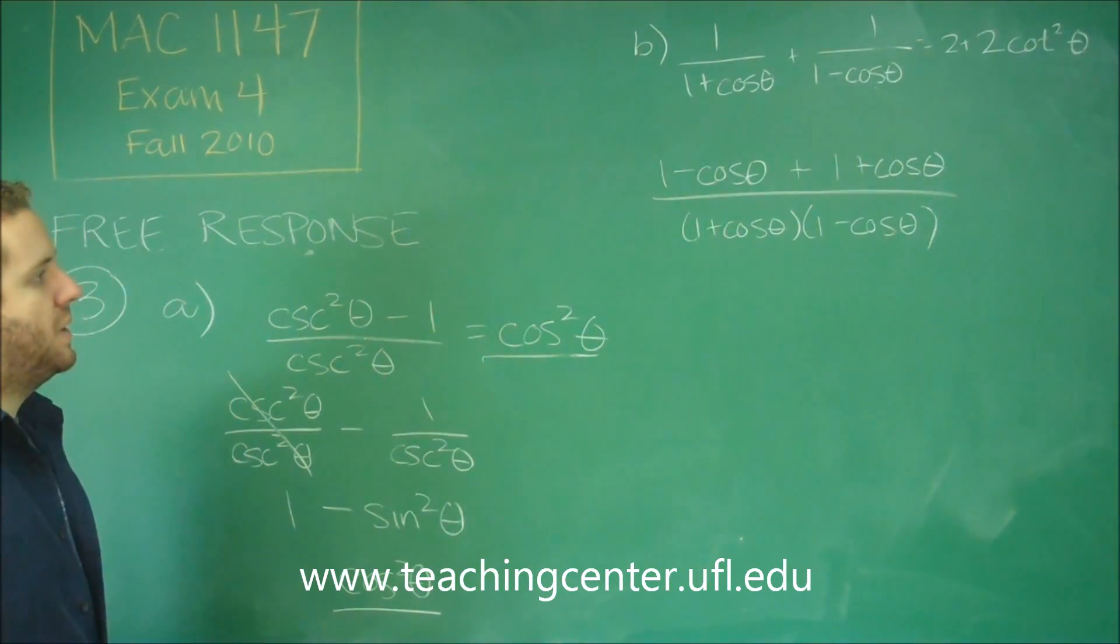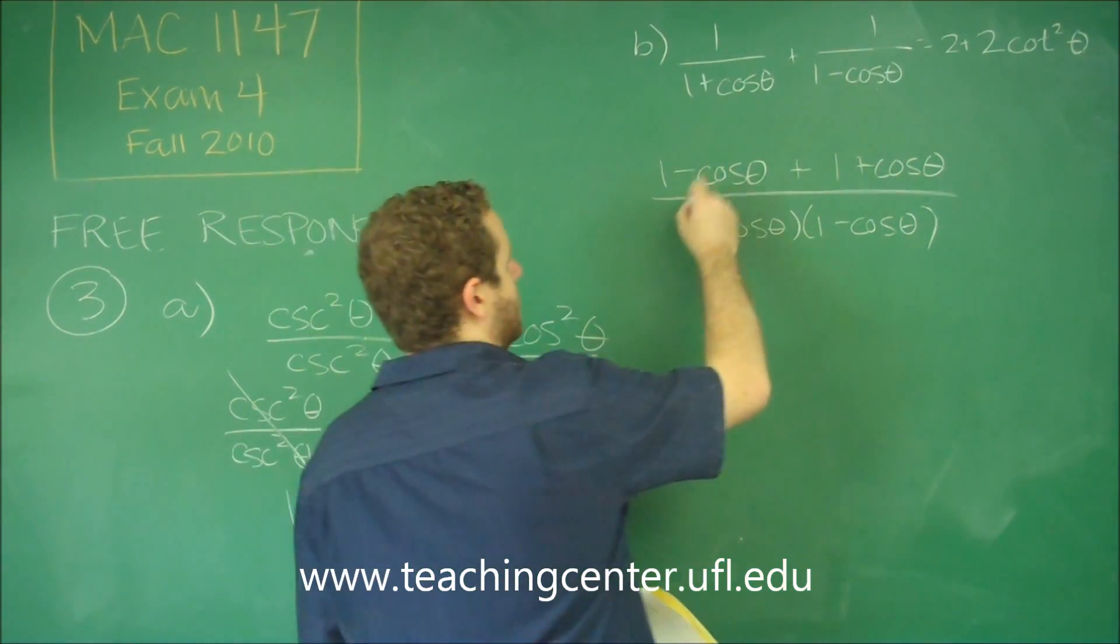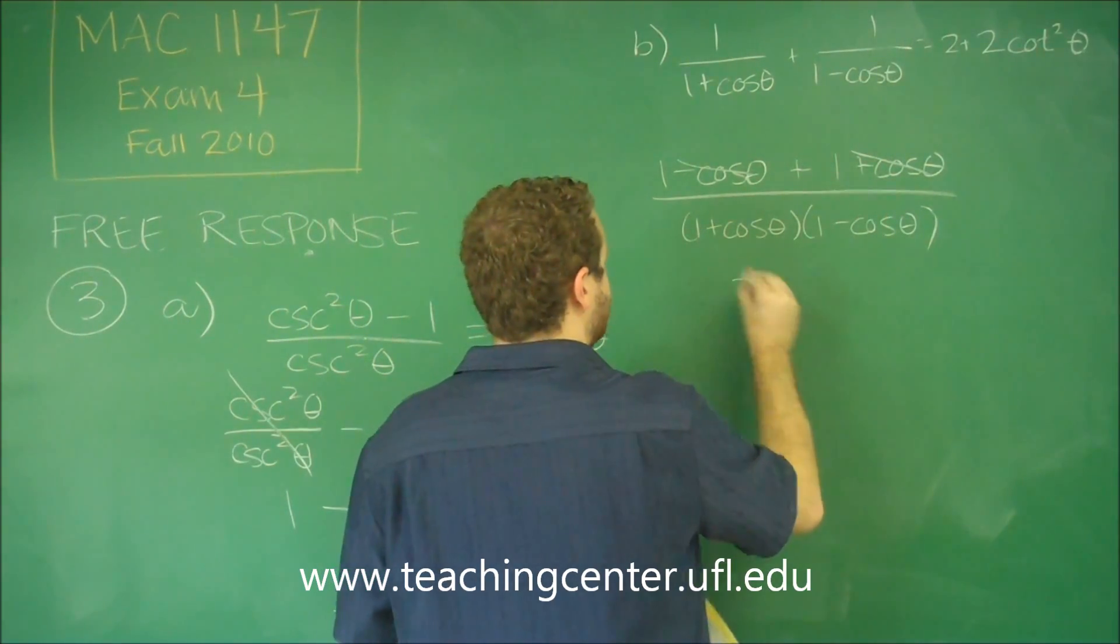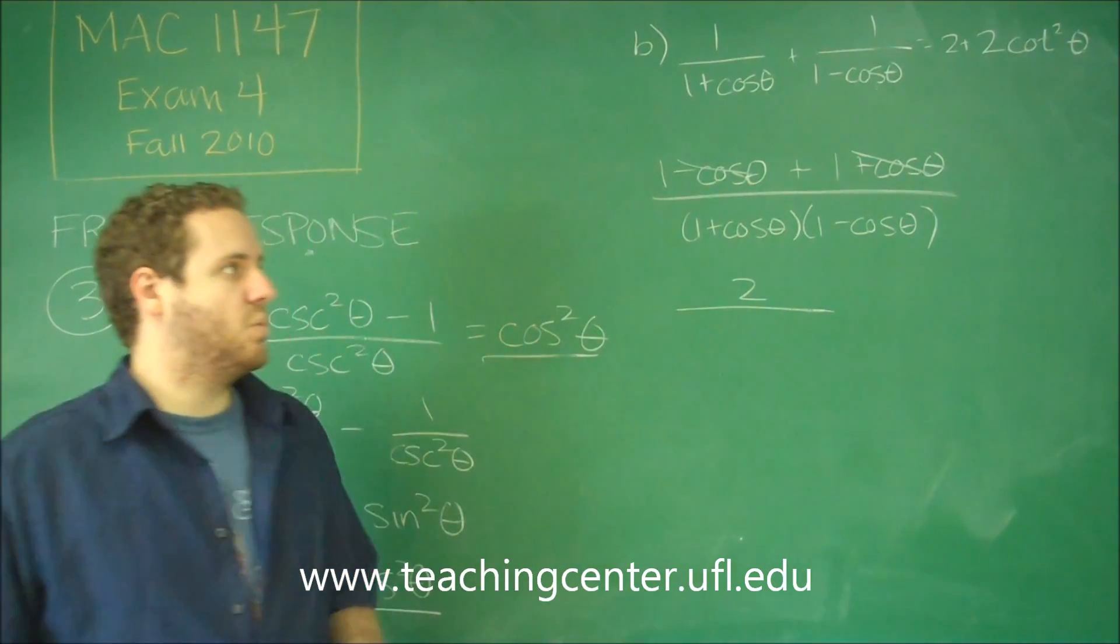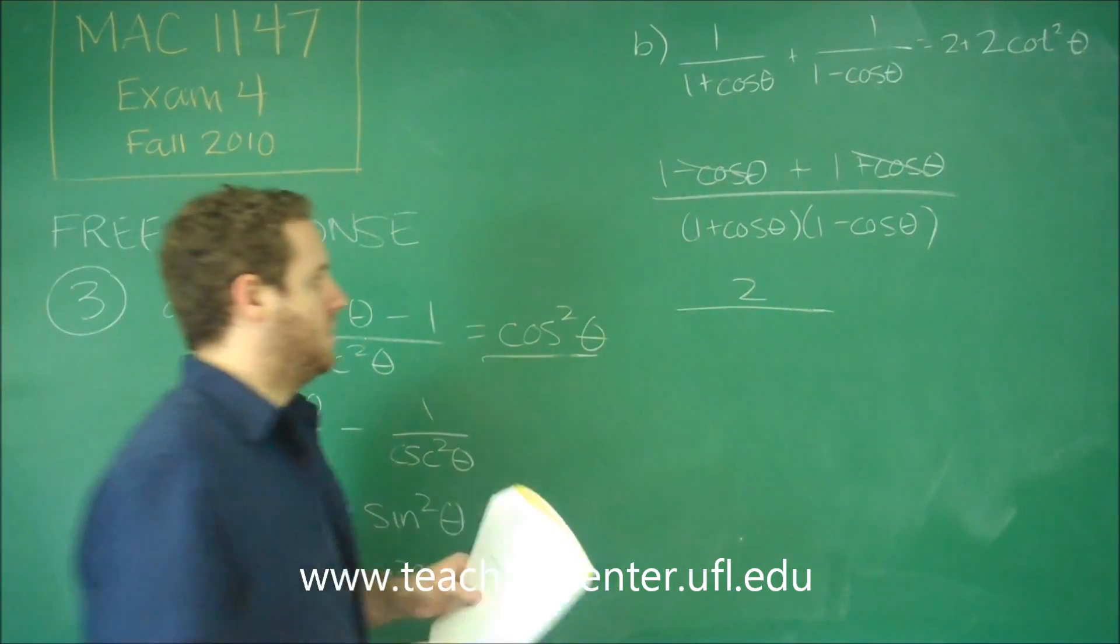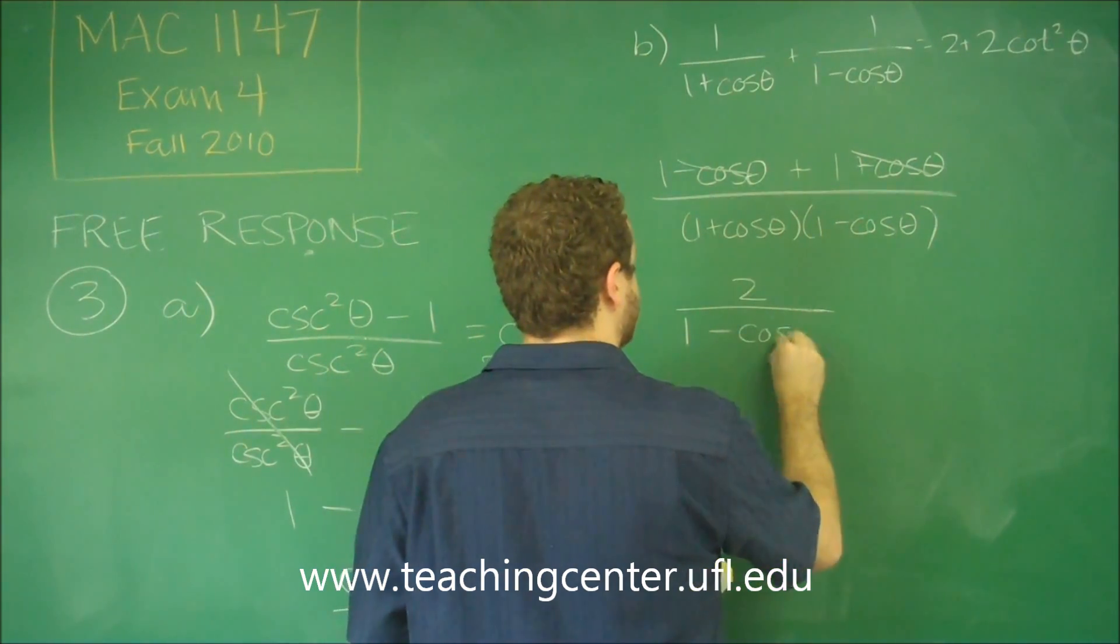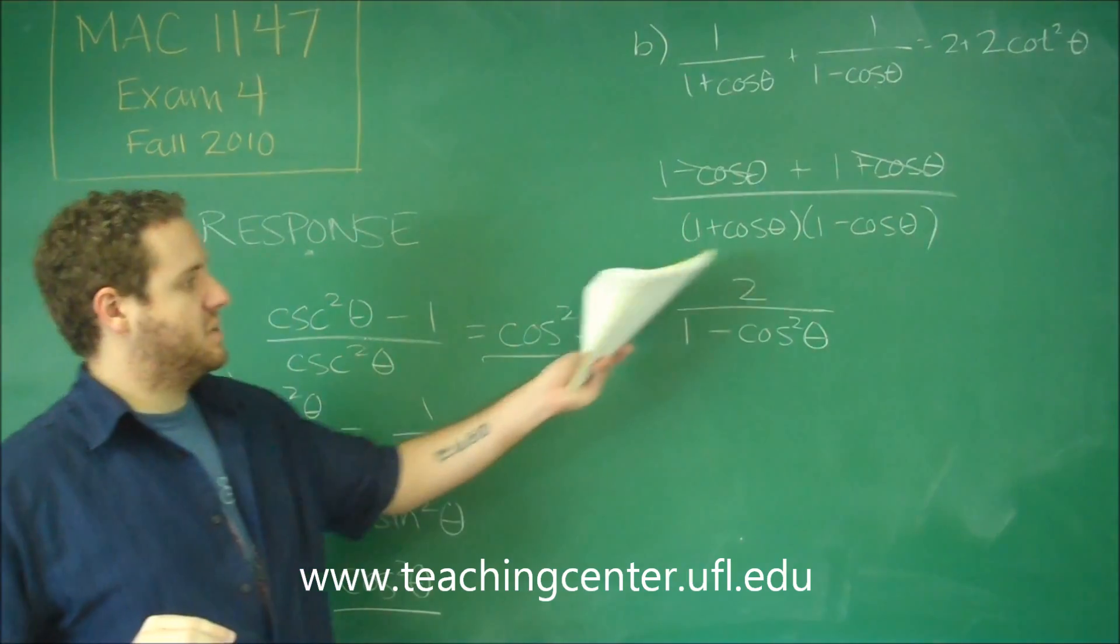So when we try to simplify everything here, let's see what we get. So on the top, we get minus cosine plus cosine. That's done. We just get a two. On the bottom, one plus cosine theta times one minus cosine theta is going to be one minus cosine theta squared. Because we have a difference of two squares.